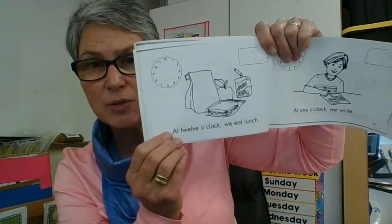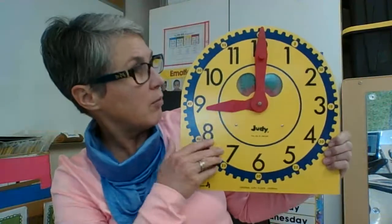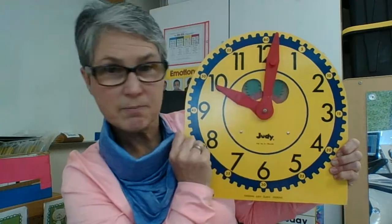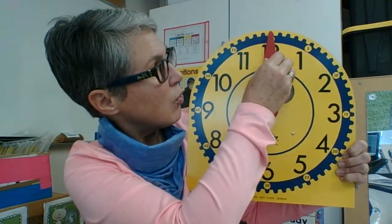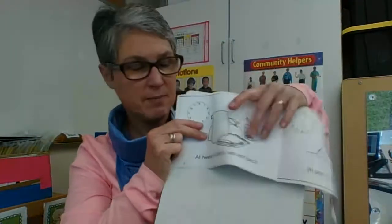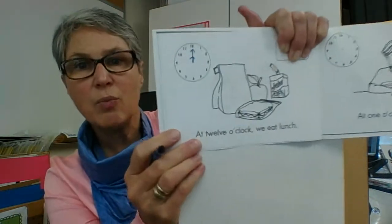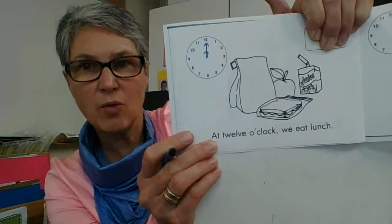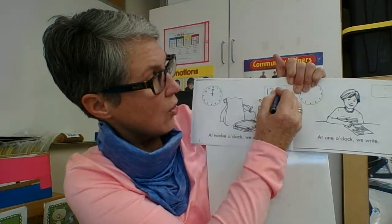Then our next page: at 12 o'clock, we eat lunch. This one I'm going to show you because it looks a little bit tricky. Here's 10 o'clock, here is 11 o'clock, and then here is 12 o'clock. Both hands are going to be pointing up to the 12 on that page — we've got our minute hand and our hour hand pointing to exactly the same number. At 12 o'clock, we eat lunch. That's our analog time, and then our digital time: 12:00.